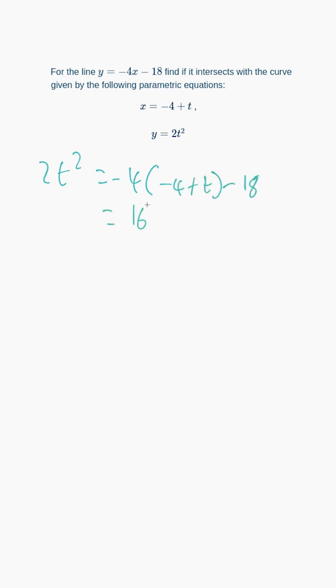I'm going to simplify this and get it onto one side. So it's going to be 16 minus 4t minus 18. 16 minus 18 is minus 2.